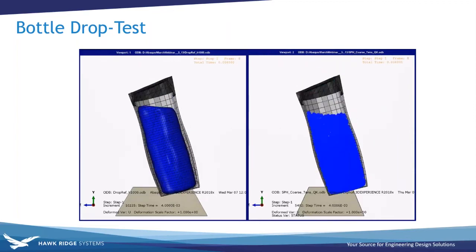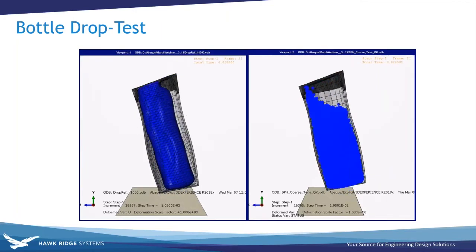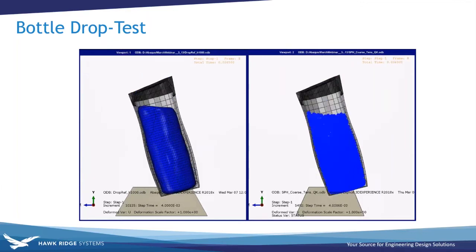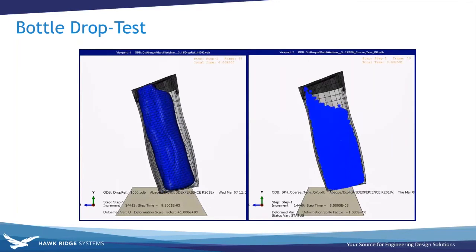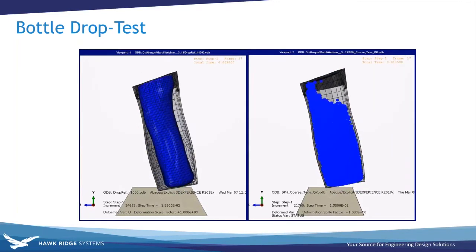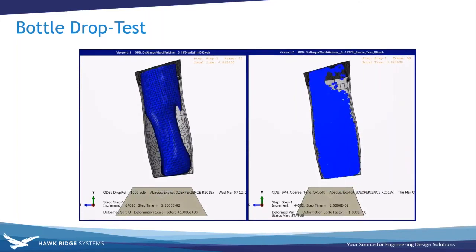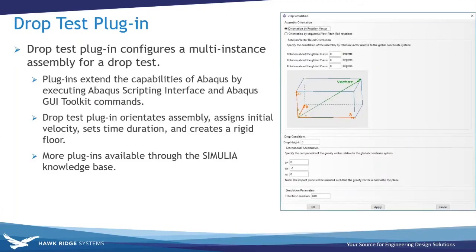Thanks Tim. We'll be looking at this case study that you see here on the screen. We've got the Eulerian mesh on the left and then the SPH study on the right. We'll be taking a look at that Eulerian setup and we'll be using one of the plugins available through the Simulia knowledge base called the drop test plugin. That's going to help us set up the study and automate a lot of the steps that we would normally have to set up manually. That drop test plugin is one of the many plugins available that allows us to extend the capabilities of Abaqus by running either scripts or GUI toolkit commands. There are a lot of these available through the Simulia knowledge base, and you can create your own as well or take one and modify it to meet your own needs like we've done with this drop test plugin.